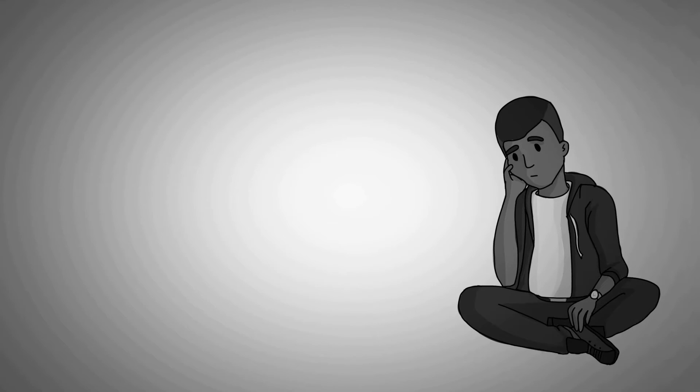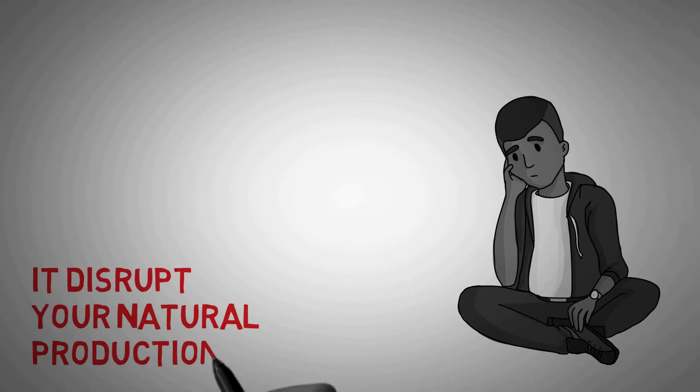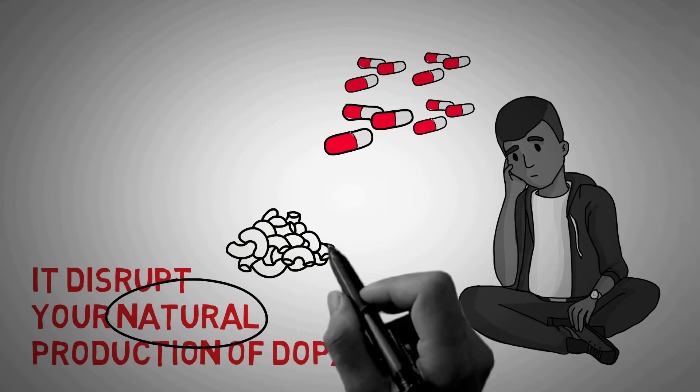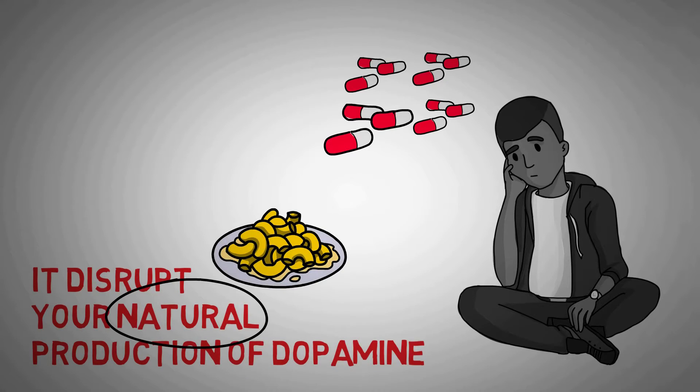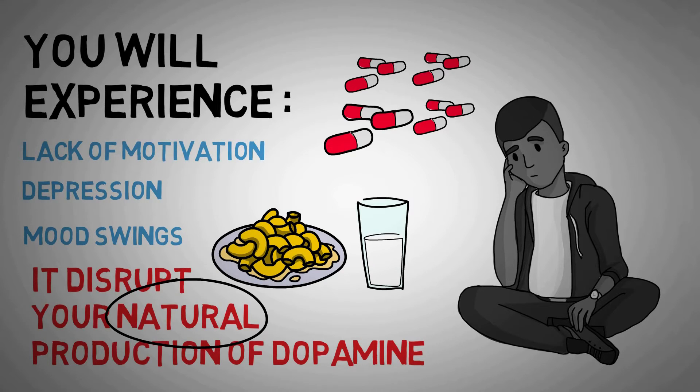Doing drugs will deplete your dopamine reserves and mess with your natural production of dopamine. This will in the end result in addiction because when you get dopamine from somewhere else than your natural dopamine production, your brain doesn't get the same amount of dopamine from doing normal things like eating or drinking, for example. Because of this you'll experience mood swings, depression, lack of motivation, and the list goes on.